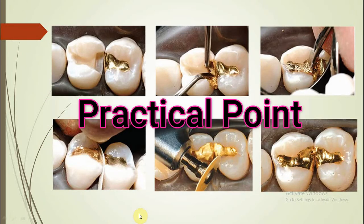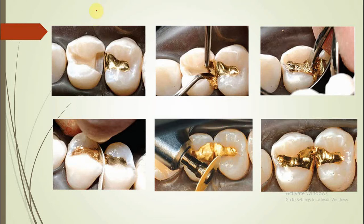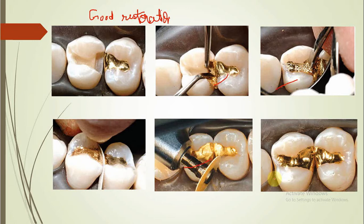This is a practical point: if you want a good restoration, do it in increments — whether it is composite, DFG, or amalgam. Cavity preparation, filling in increments, compacting, then finishing, and finally polishing.